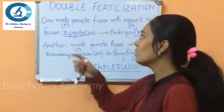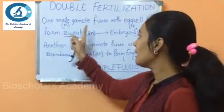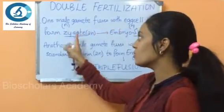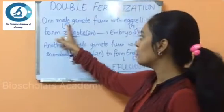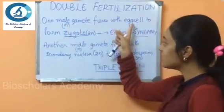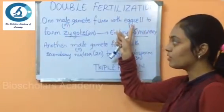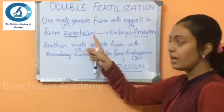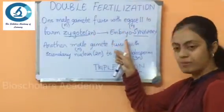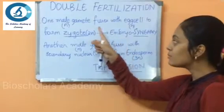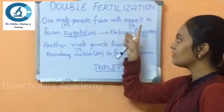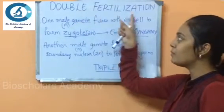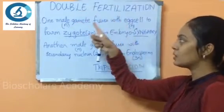One male gamete fuses with the egg cell to form a zygote. The male gamete is haploid, denoted by N, and the egg cell is also haploid, denoted by N. They fuse to form the zygote, which is diploid, and this zygote develops into the embryo. This process of fusion of the male gamete with the egg cell is called syngamy, and it is the first fusion in double fertilization.